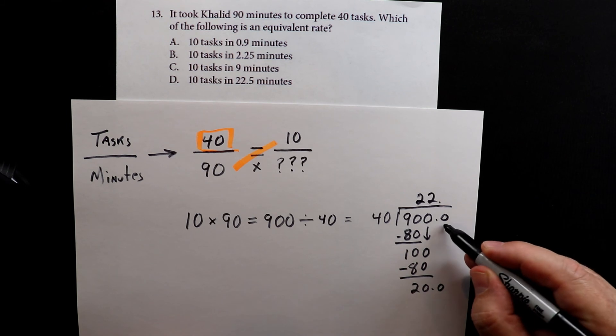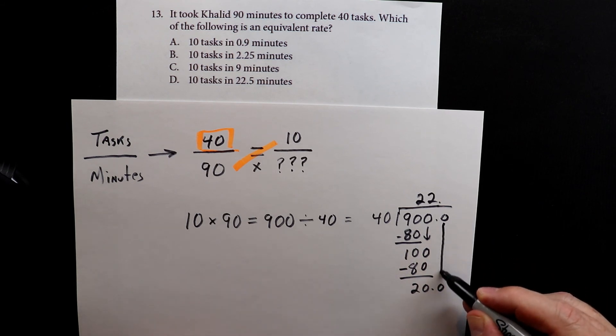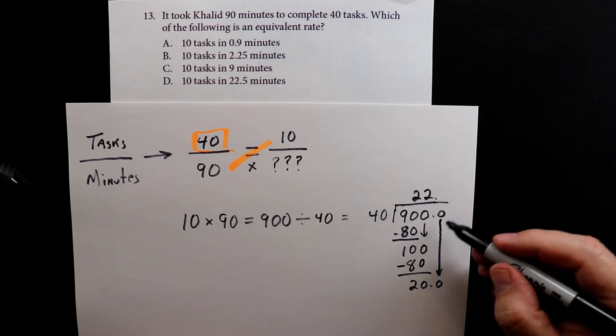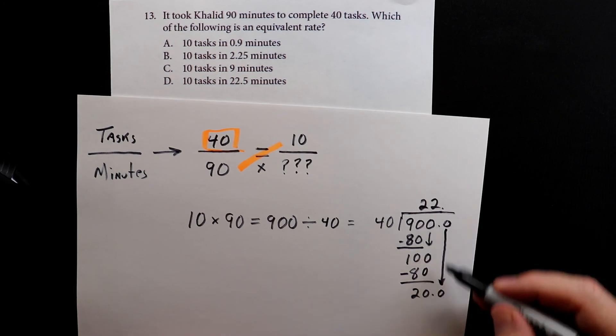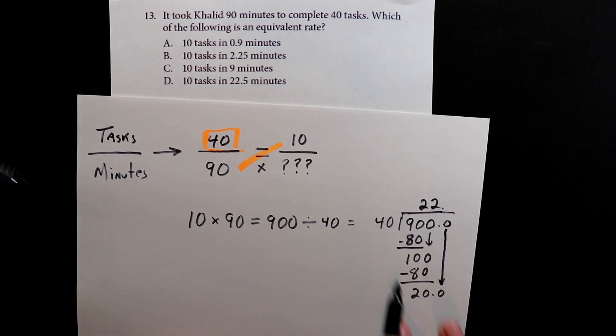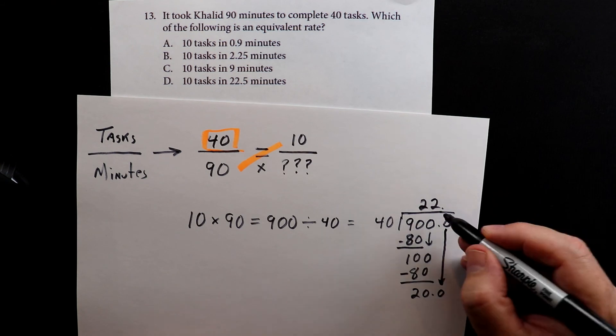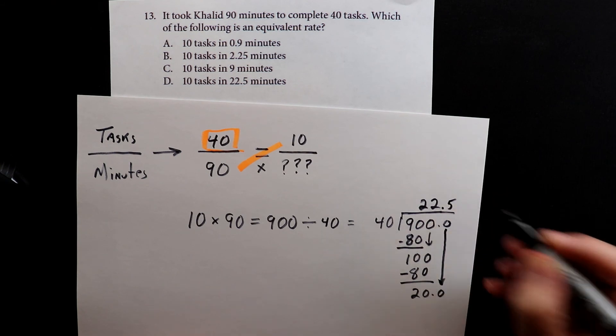I add another zero. And again, I like to use these big long arrows just to keep everything nice and neat. So 40 goes into 200 five times.